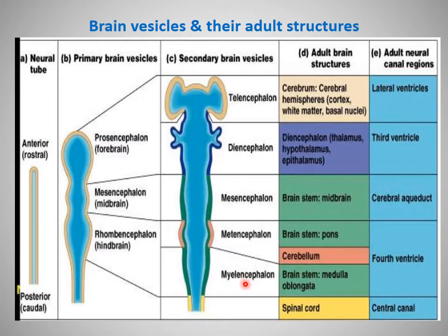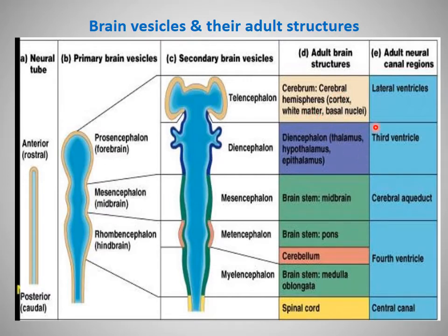The myelencephalon gives rise to the medulla oblongata, and the metencephalon gives rise to the pons and cerebellum. The mesencephalon gives rise to the midbrain. The diencephalon gives rise to the thalamus, hypothalamus, and epithalamus, and the telencephalon forms the cerebral hemispheres. The cavity of the telencephalon is the lateral ventricle, the diencephalon is the third ventricle, the midbrain cavity is the cerebral aqueduct, and the fourth ventricle is the cavity of the pons and medulla.